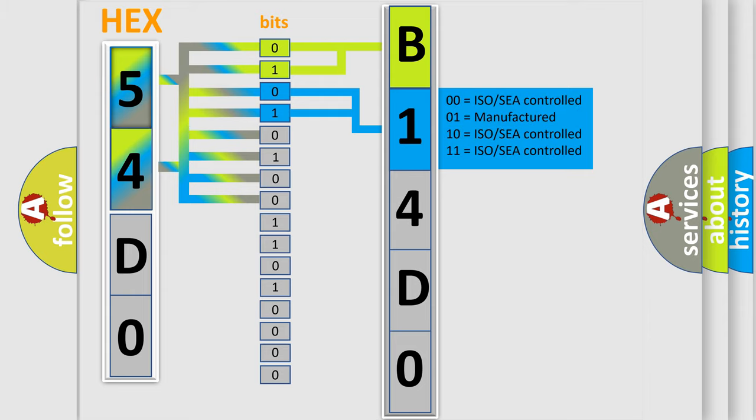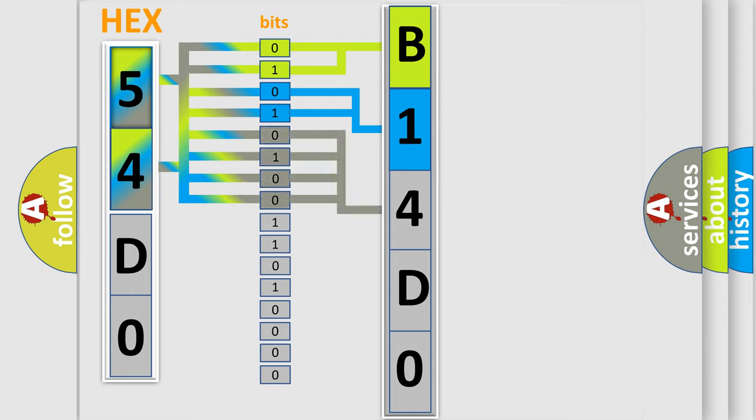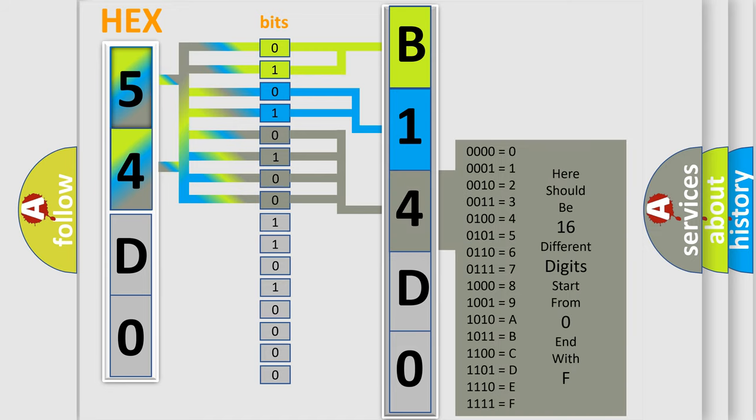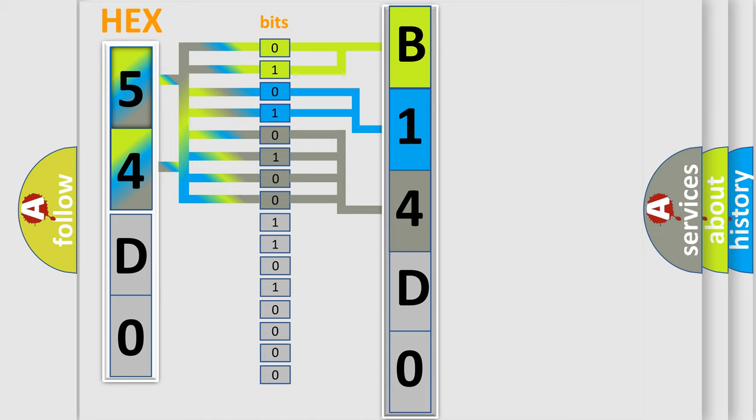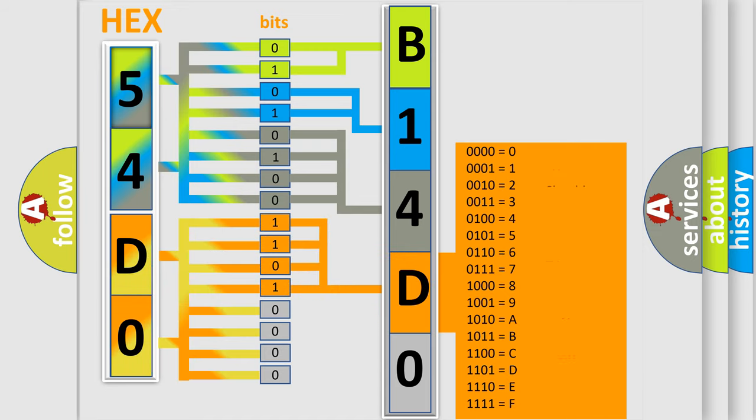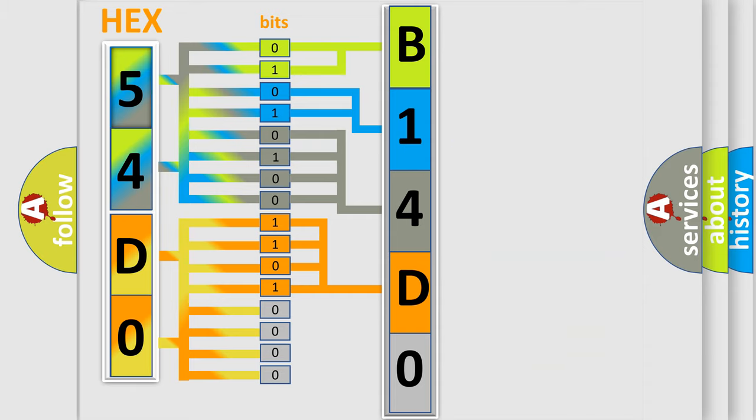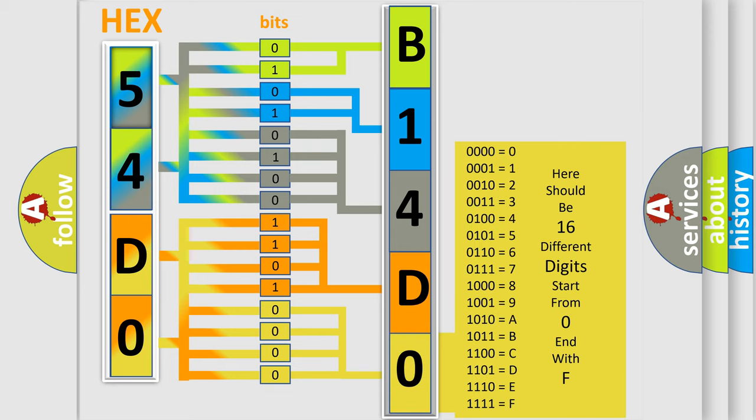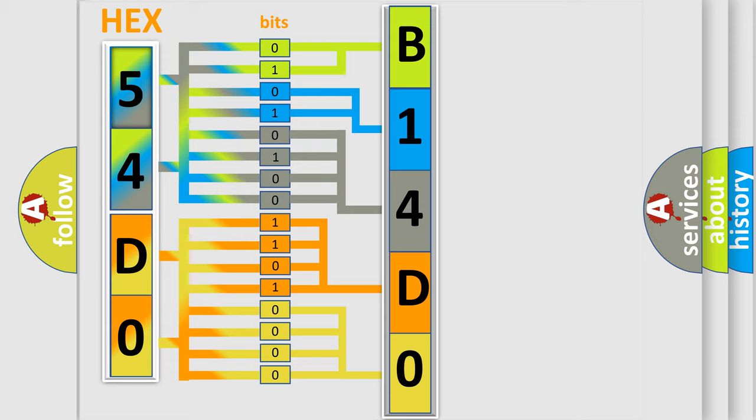The last four bits of the first byte define the third character of the code. The second byte is composed of eight bits. The first four bits determine the fourth character, and the last four bits define the fifth character. A single byte conceals 256 possible combinations. We now know how the diagnostic tool translates the received information into a more comprehensible format.